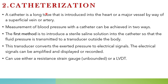The second method is catheterization. In catheterization, a catheter is a long tube that is introduced into the heart or a major vessel like a vein or artery. Measurement of blood pressure with a catheter can be achieved in two ways. In the first method, a sterile saline solution is introduced into the catheter so that the fluid pressure is transmitted to a transducer outside the body.